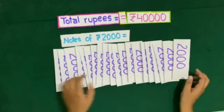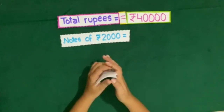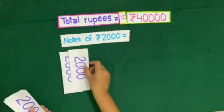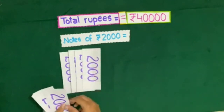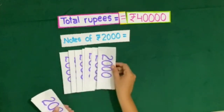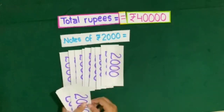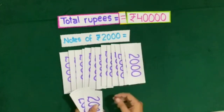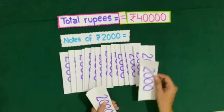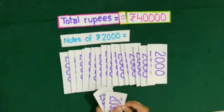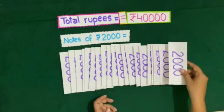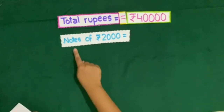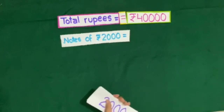So now let us count how many 2000 rupee notes make 40,000 rupees. Let us count the notes: 1, 2, 3, 4, 5, 6, 7, 8, 9, 10, 11, 12, 13, 14, 15, 16, 17, 18, 19, 20. So these are 20 notes of rupees 2000. Notes of 2000 rupees is equal to 20.